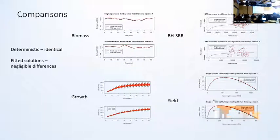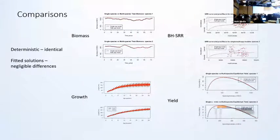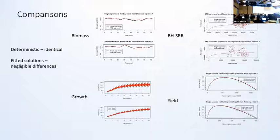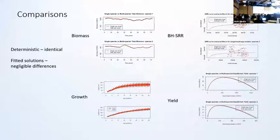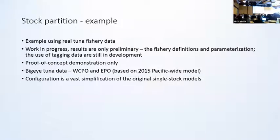The deterministic part of the testing using fixed parameters being input to the model produced identical results for the before and after, which is what we were seeking. Shown here are the pairwise comparisons of the fitted solutions — running the single-species models to convergence and then running the same data with the multi-species partitioning to convergence. This shows that there were negligible differences in terms of biomass, growth estimates, the Beverton-Holt stock-recruitment relationships, and the estimated equilibrium yields. This essentially confirmed that the code operations were replicated equally when being applied with the multi-species partitioning.